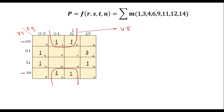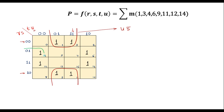Now this 1, this 1, this 1, and this 1 can together make another quad. In between this column and this column, the common factor is 0, which is U bar. In between these two rows, 1 is common, which is with respect to S. So this quad gives S·Ū.